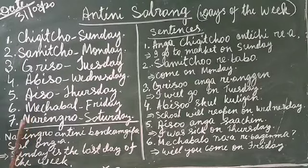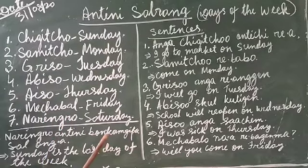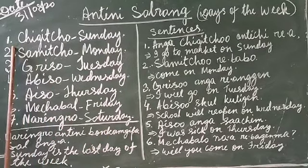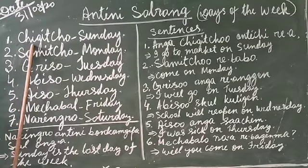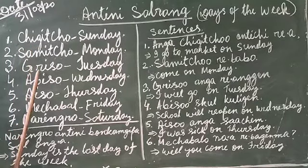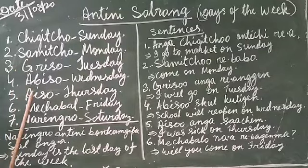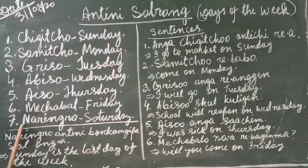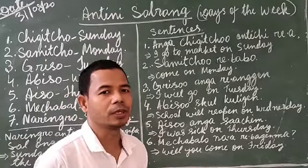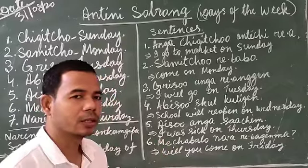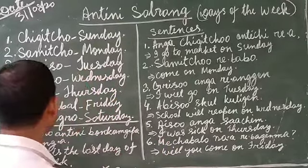Let me say how to say directly, from number one to seven: shigucho, samucho, greenso, abiso, ayiso, mechabal, and naramuro. These are the names of the days of the week — Sunday to Saturday.